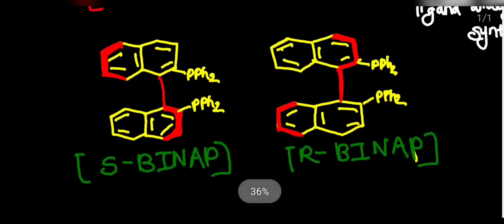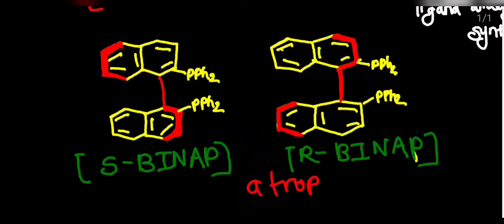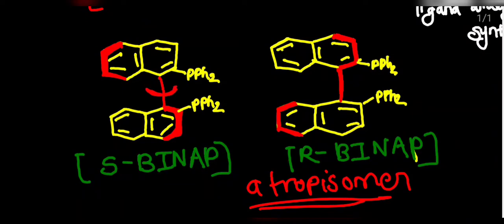There are two forms of this ligand: S-BINAP and R-BINAP. If you carefully observe this structure, these two ligands are chiral in nature. How does the chirality come in this molecule? The chirality is introduced due to the phenomenon called atropisomerism — the rotation around this bond is restricted, due to which chirality is introduced. You can see the bond highlighted in red color; it is coming towards you while the other bonds are at the back side. Similarly in R-BINAP, the red bonds are towards you while the remaining structure is below the plane.